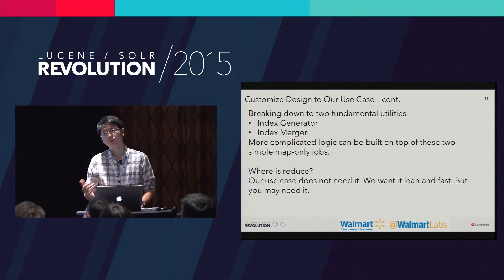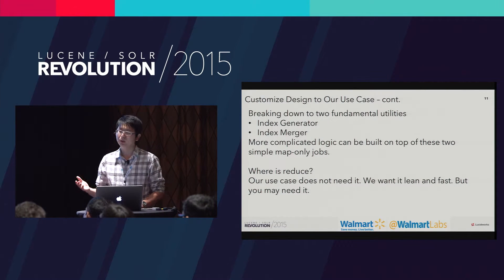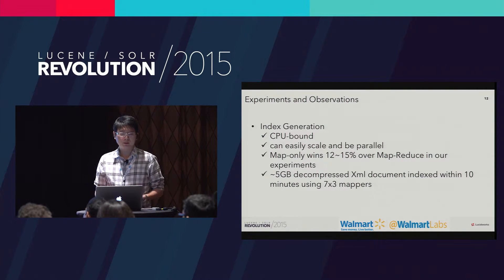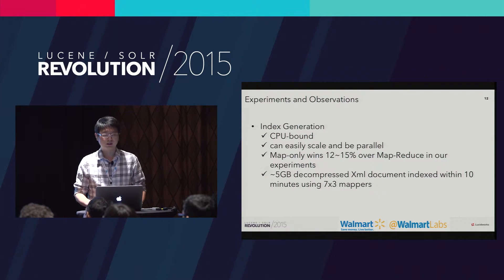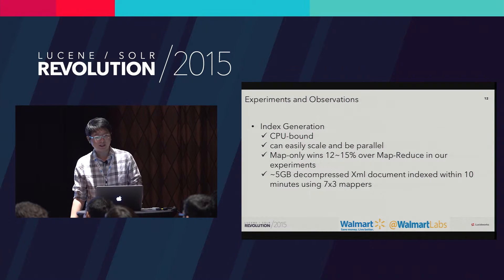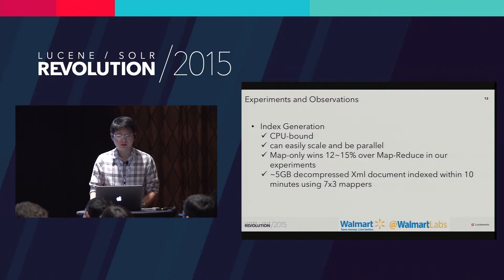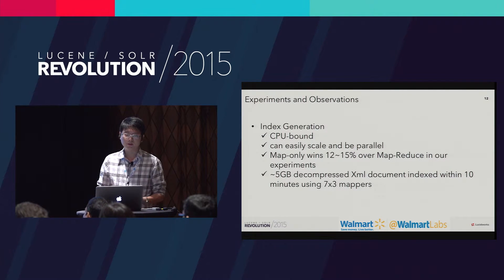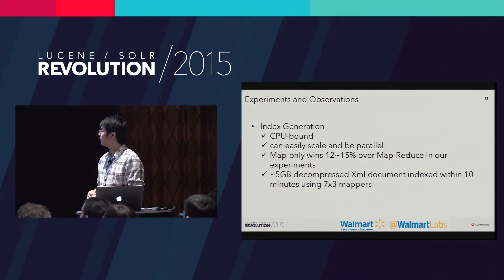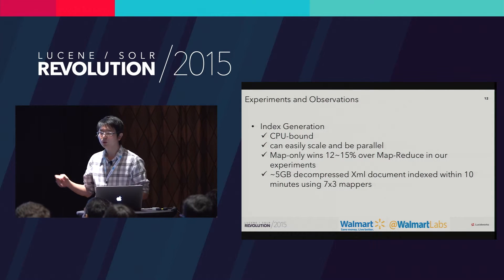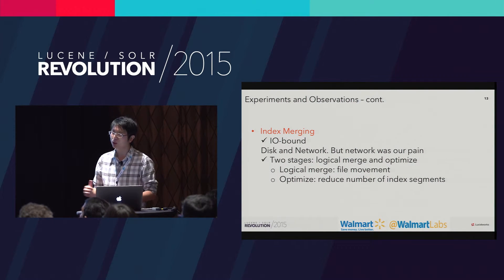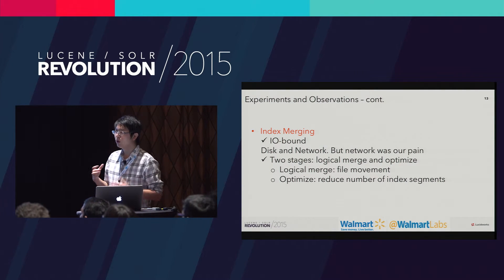The original MapReduce indexer tool was a bit complicated for us. First, the input format requires Morphline, and we want more control as developers. We want something lean and fast, so we stripped out some unnecessary components — for example, we don't use reduce. Maybe for your use case you may need it for data manipulation like deduplication. In our experiment, we observed that index generation is basically CPU-bound and can be easily scaled in parallel. The map-only job wins around 12 to 15% over the map-reduce job. With 5 GB of decompressed XML documents, this took around 10 minutes for pure indexing, producing around 21 segments or shards of binary index.